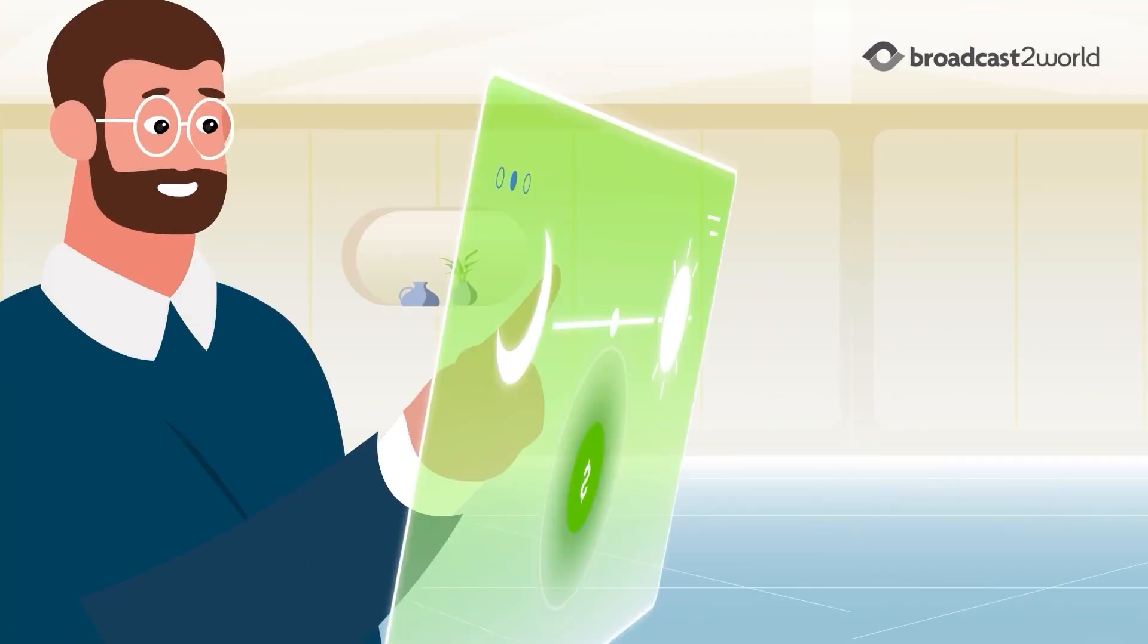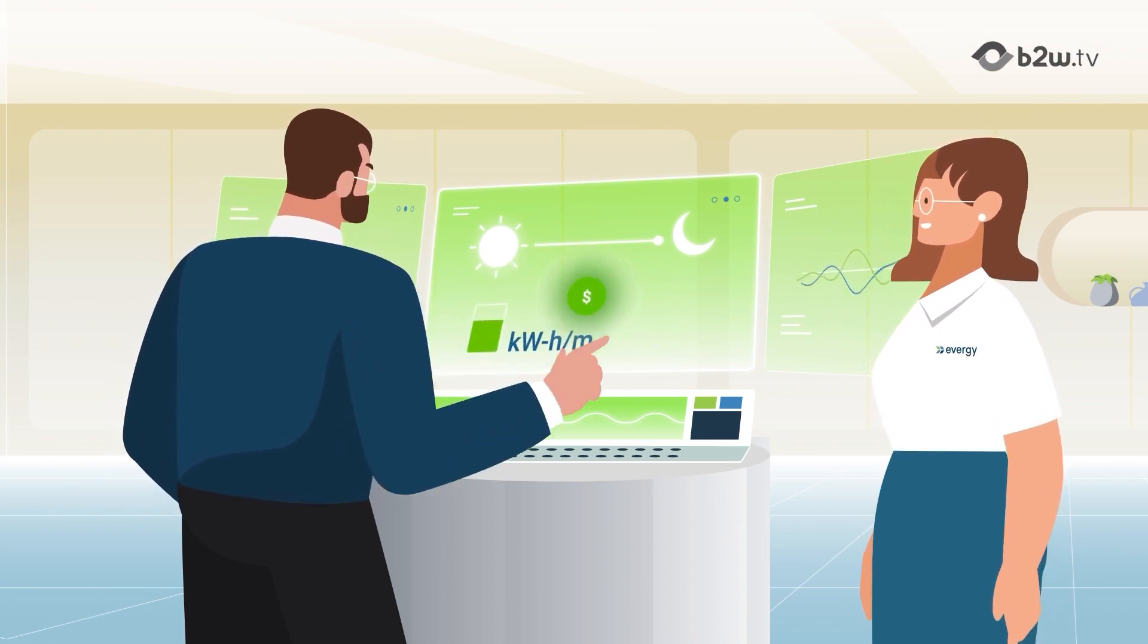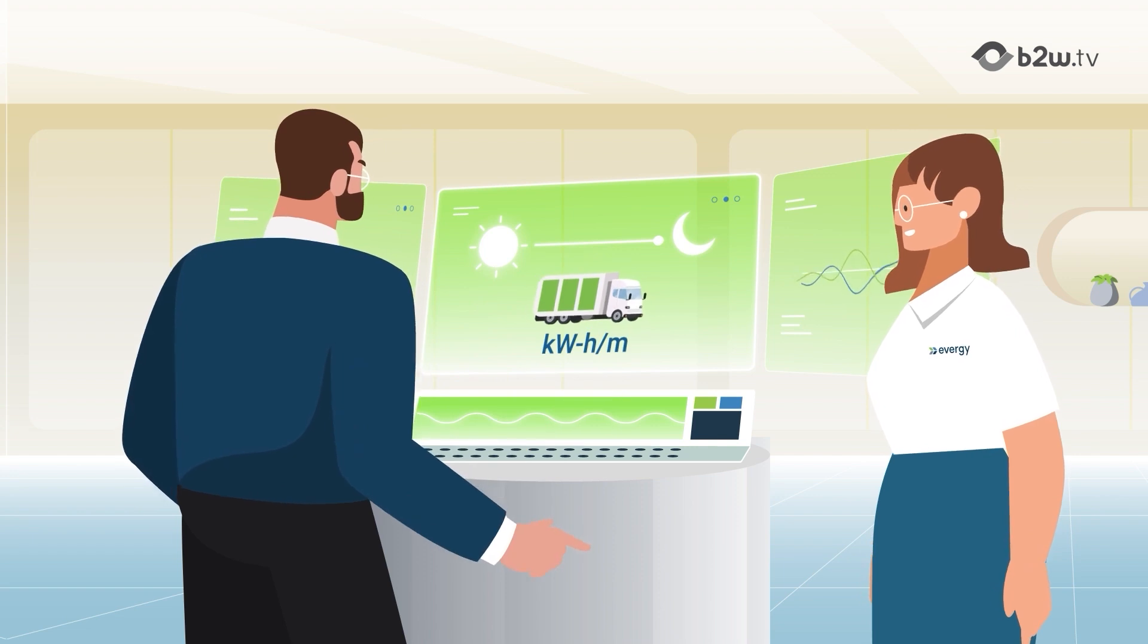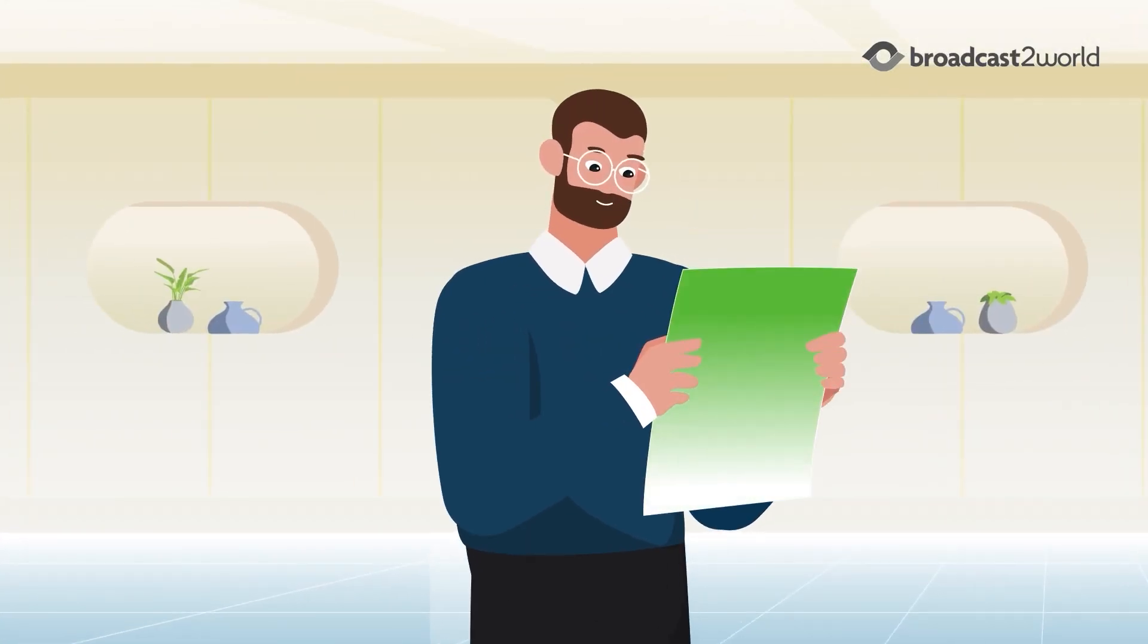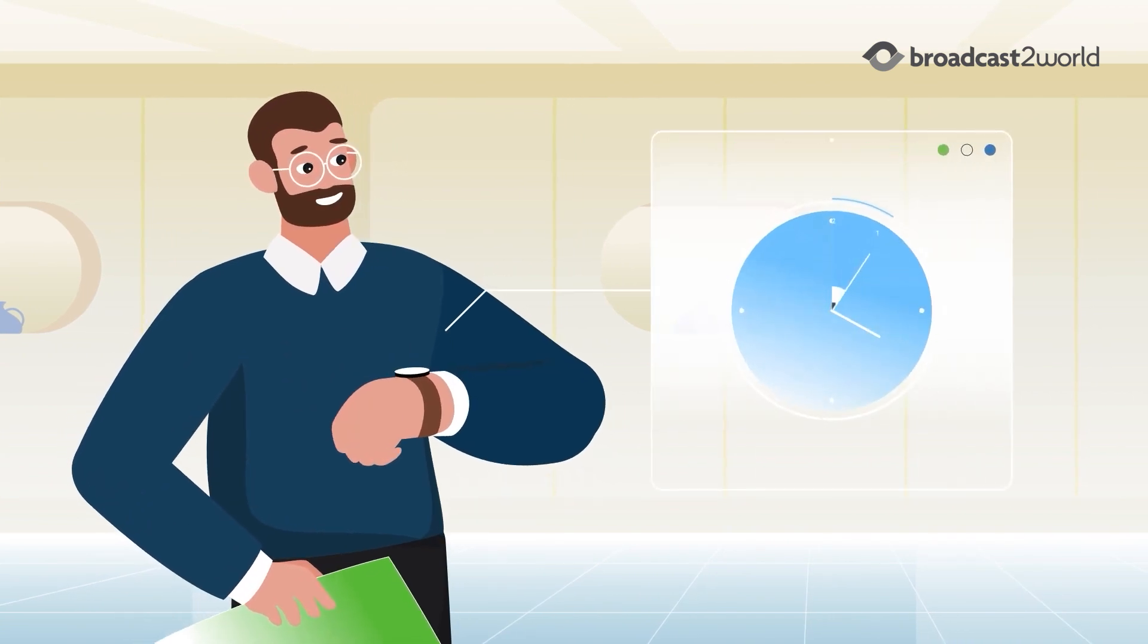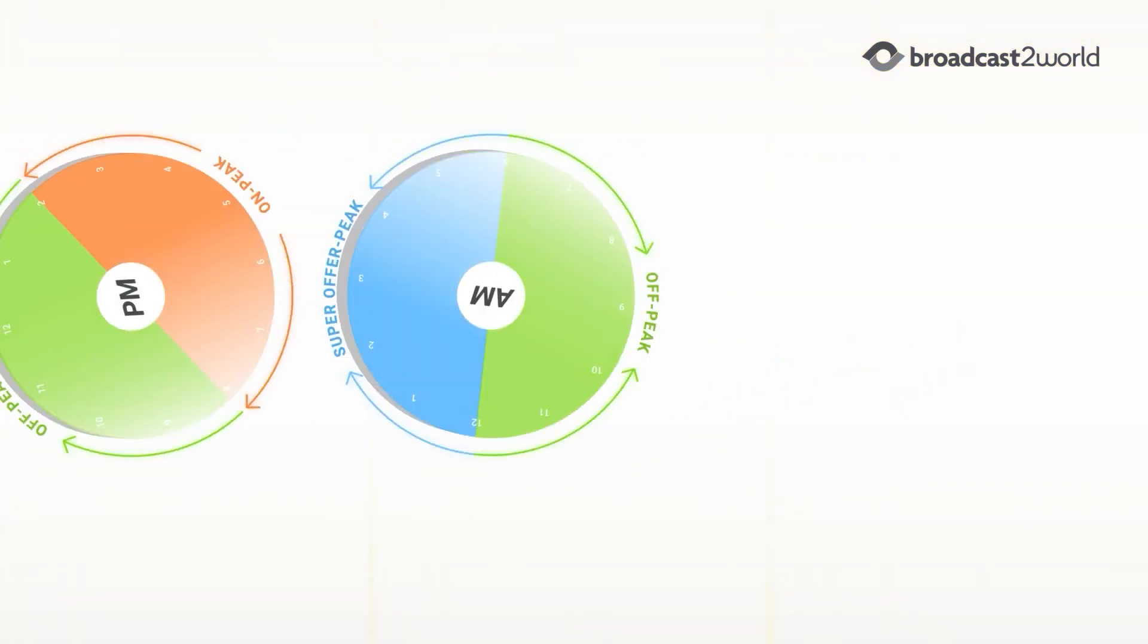The managed charging software assesses various factors such as energy rates, operating hours, and daily mileage for each vehicle to create a charging plan that meets your collective needs and leverages off-peak pricing to reduce energy costs and demand for your business.